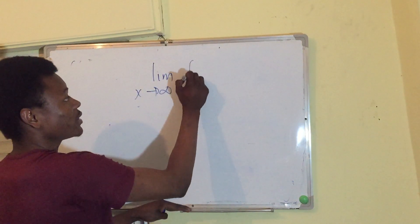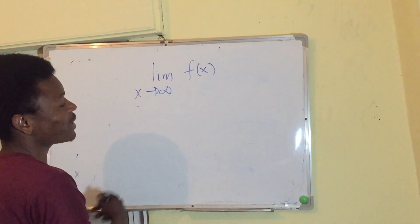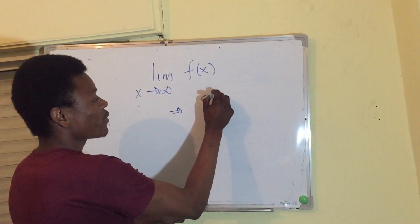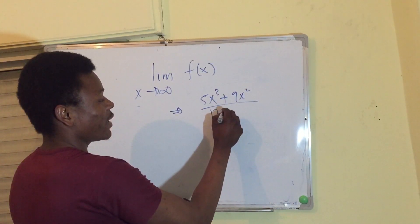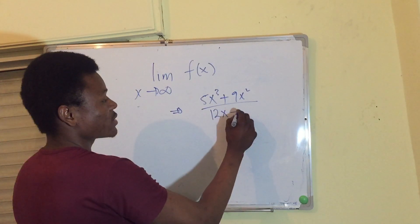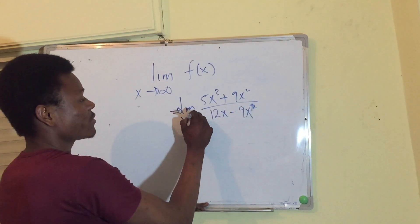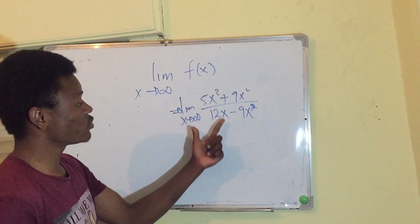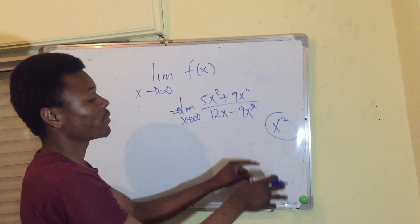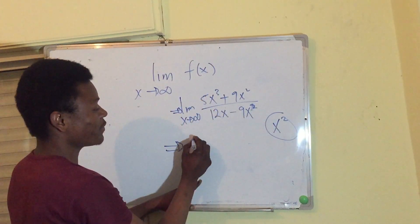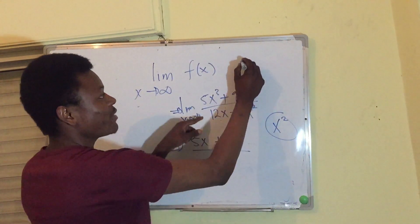When x approaches infinity, for a rational function like (5x³ − 9x²)/(12x − 9x²), we divide through by the highest power — in this case x² — to evaluate the limit at infinity.